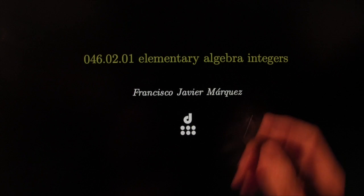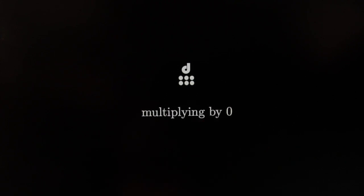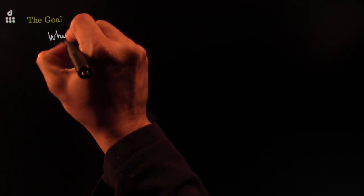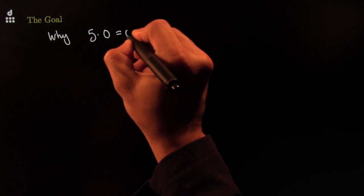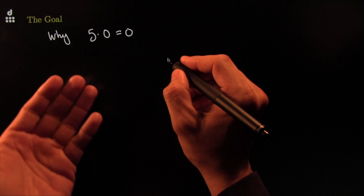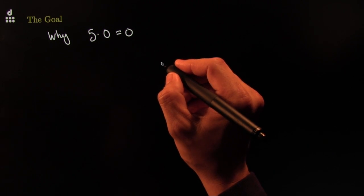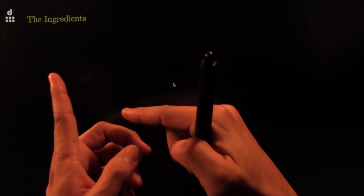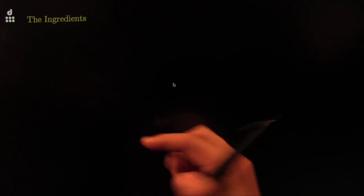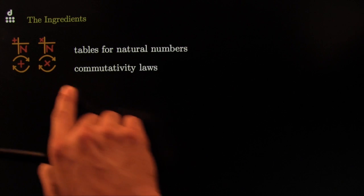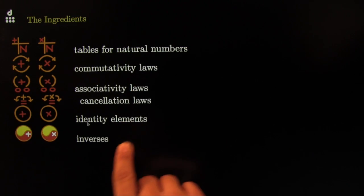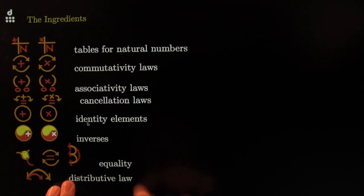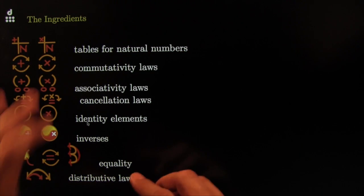Redemption day for your three-and-a-half-pound brain. Here we go. Why is it that when we multiply by zero you get zero? The goal is to learn why five times zero equals zero. Everybody knows it does, but nobody can really give you a straight answer. Today we're going to learn why. The ingredients are going to be the axioms we learned the last couple of weeks: addition and multiplication tables for natural numbers, commutativity, associativity, cancellation laws, identity elements, inverse elements, equality axioms, and the distributive law.